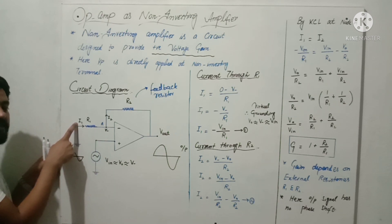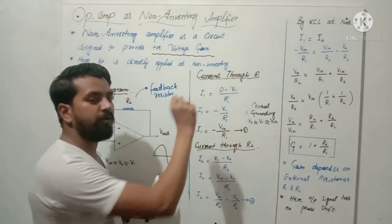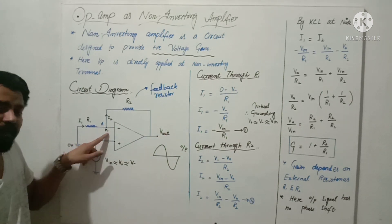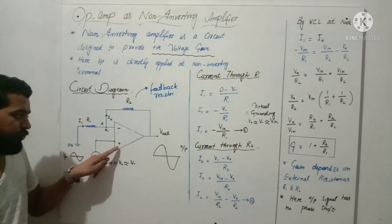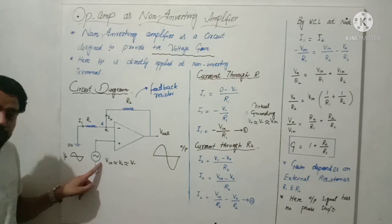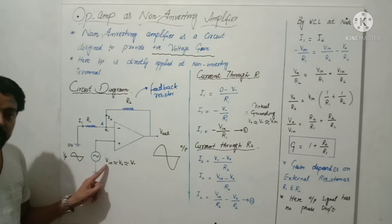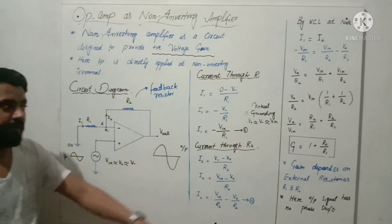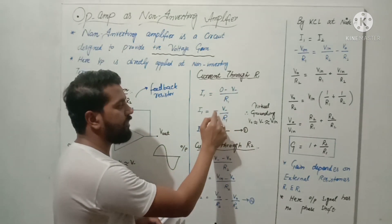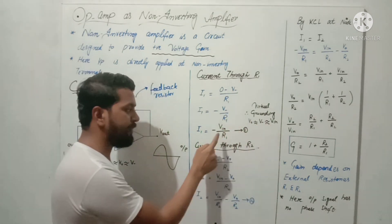So we have 0 minus V-negative, and using V = IR, I = V/R. I have written that I1 is equal to (0 minus V-negative) upon R1. Now, V-negative is basically the voltage at the positive terminal, which is the input voltage we have applied. This means V-negative is equal to V-in. And using the virtual grounding principle, we have 0 minus V-negative upon R1, and since V-negative equals V-in, we get I1 = minus V-in upon R1.